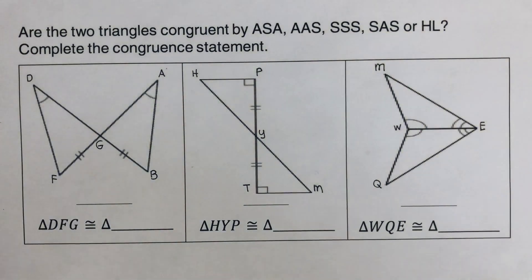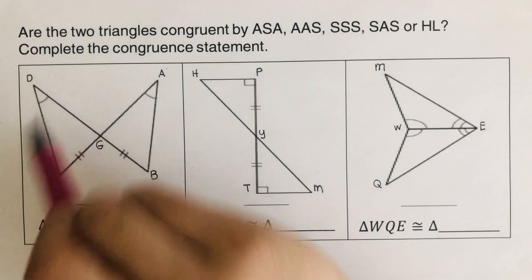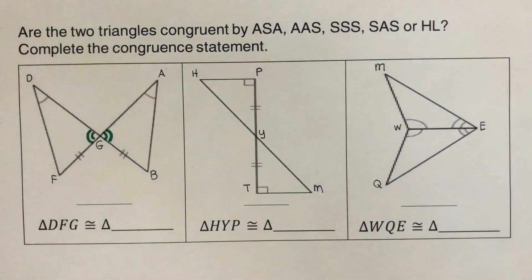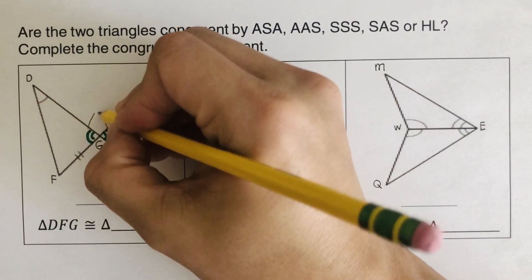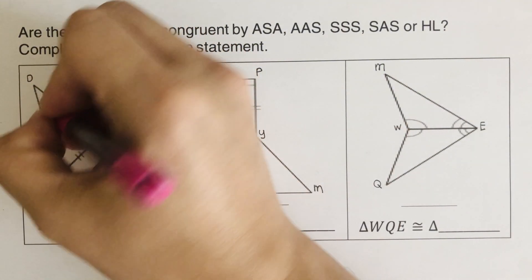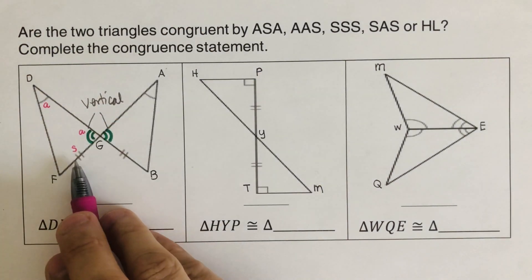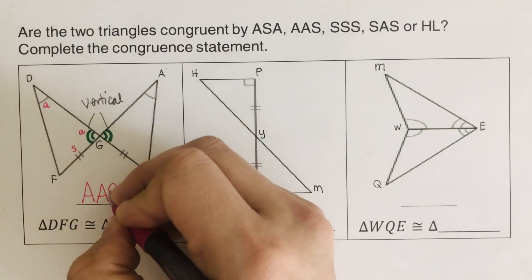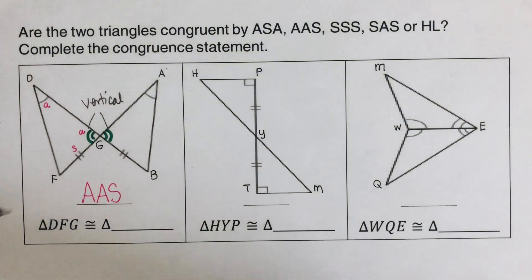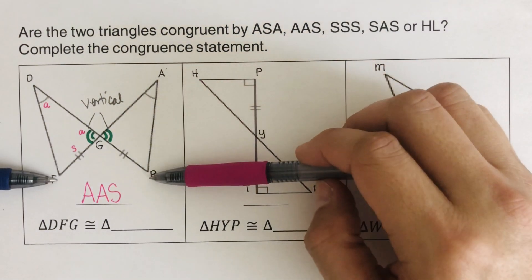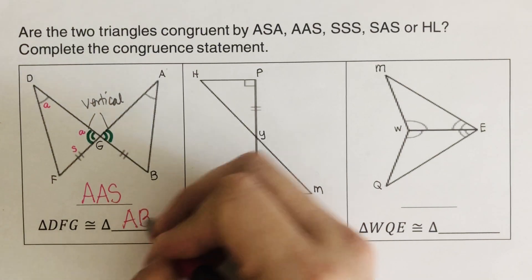Let's go over the problem. We have another angle here — automatic — even if it's not ticked, that's automatically congruent since these two angles are vertical. So the pattern is angle, angle, and a side — the side is not in the middle, so this is AAS. The triangle is named D, F, G, and the corresponding triangle would be A, B, G. These letters should not be switched around because they are a match — they are corresponding congruent angles.